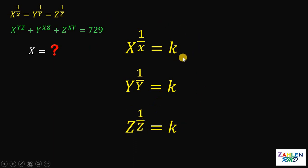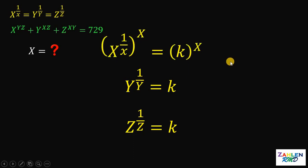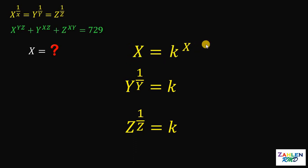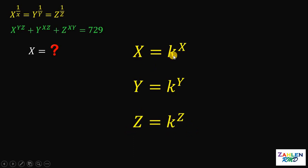Now let's focus on the first equation and solve for the value of x. We are going to raise both sides by x. On the left-hand side, x raised to 1 over x, raised to x, is just x raised to 1, which is just x. And k raised to x is just k raised to x. We do the same thing to the second and third equations, giving us: x equals k raised to x, y equals k raised to y, and z equals k raised to z.